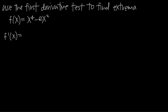The first derivative of this particular function, taking the derivative of the right-hand side term by term: the derivative of x to the fourth is 4x cubed, and the derivative of negative 2x squared is negative 4x. So f'(x) = 4x³ - 4x.